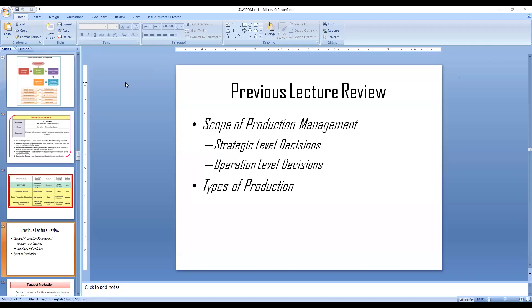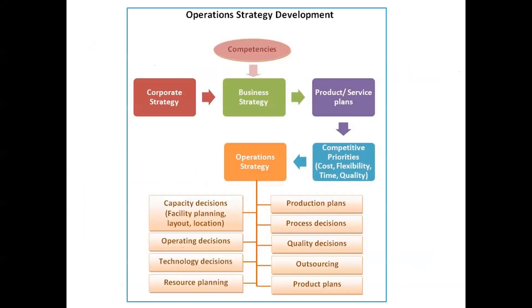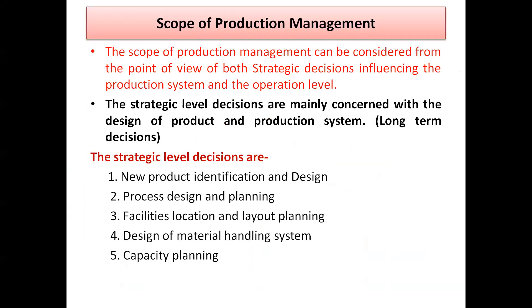Good morning everyone. In the last lecture, we discussed the scope of production management and types of production. As a quick review: the scope of production management involves two types of decisions. At the strategic level, decisions include new product identification, process design, location of facilities, plant layout, material handling system design, and capacity planning. These are long-term decisions, sometimes spanning years.